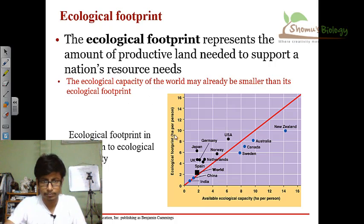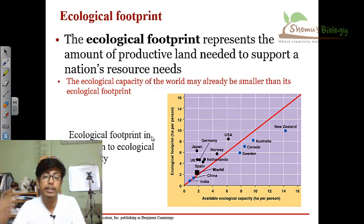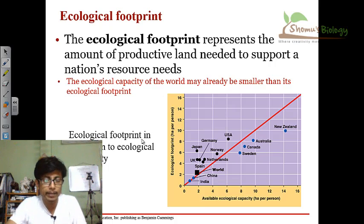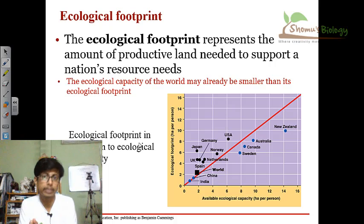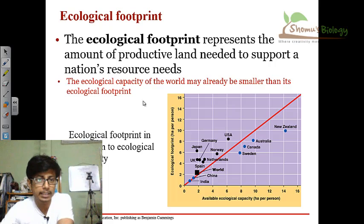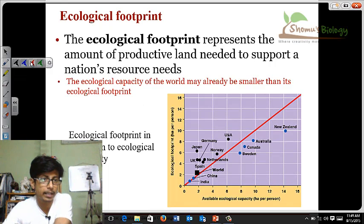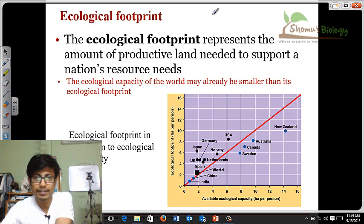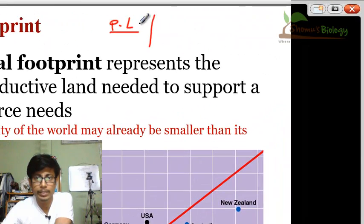So if you look at here, there are two important things. One is the available ecological capacity in a particular area, and the second thing is the ecological footprint — that means the need for productive land. So these are two things: the productive land we have and the productive land we need.